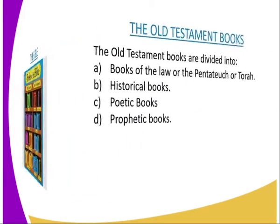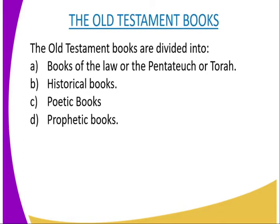The Old Testament books are divided into different categories. We have the books of the Law, or the Pentateuch, or the books of the Torah. Then we have the historical books, then the poetic books, and last the prophetic books.